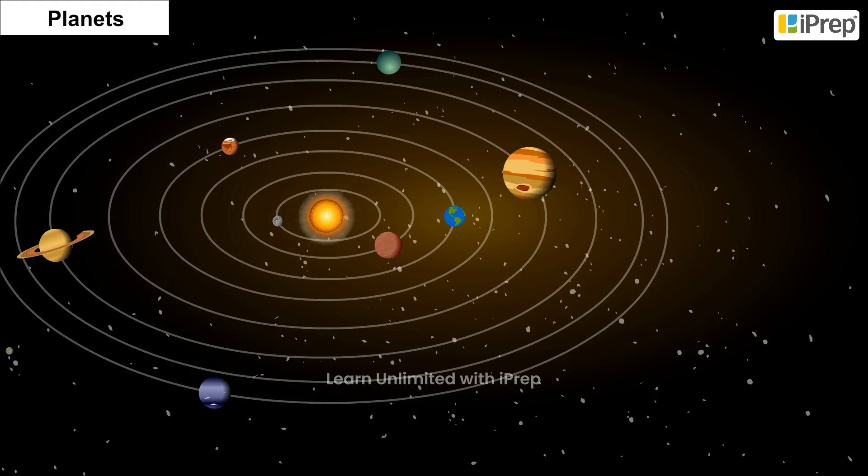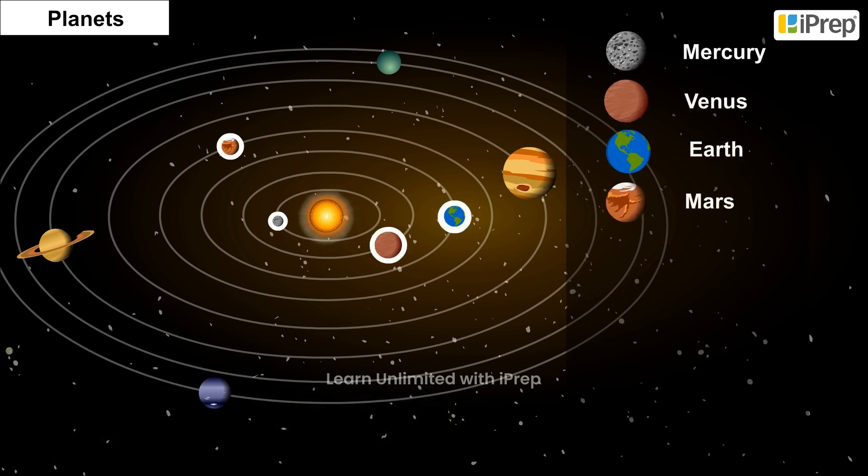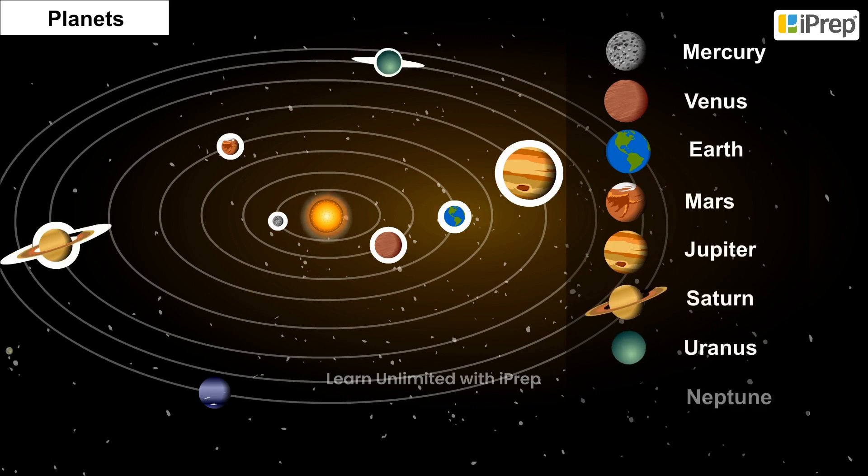The 8 planets in our solar system in order of their distance from the Sun are Mercury, Venus, Earth, Mars, Jupiter, Saturn, Uranus and Neptune.